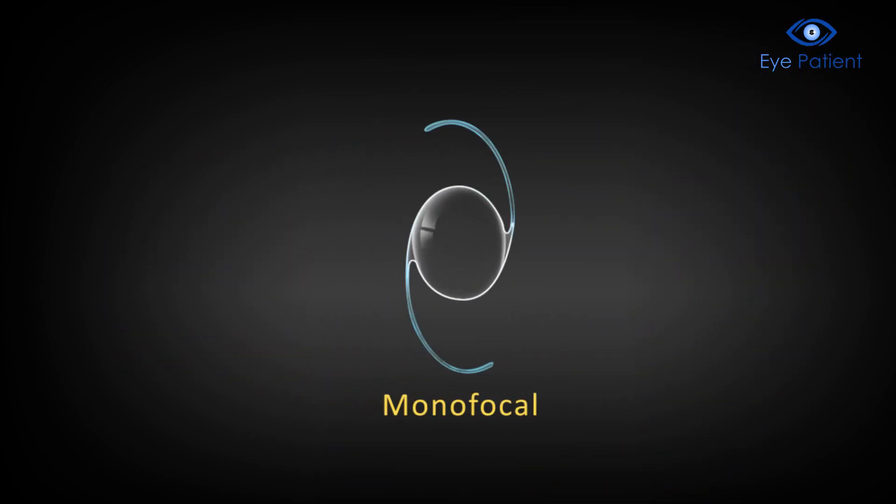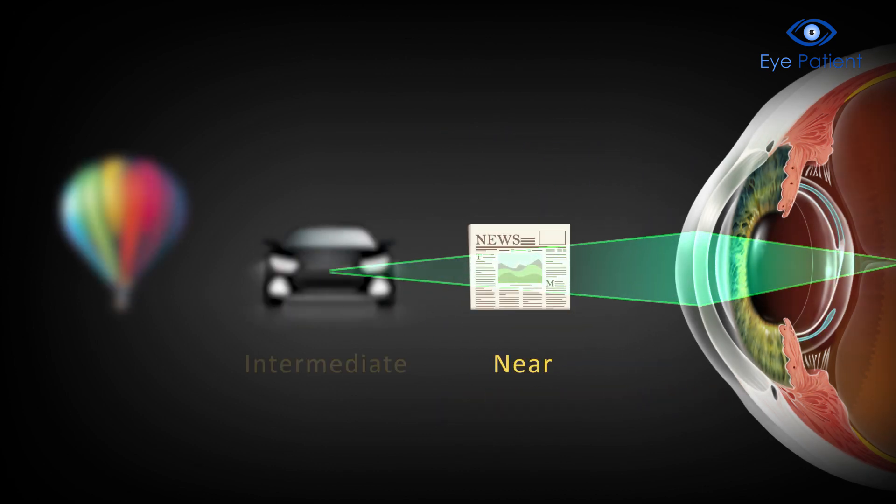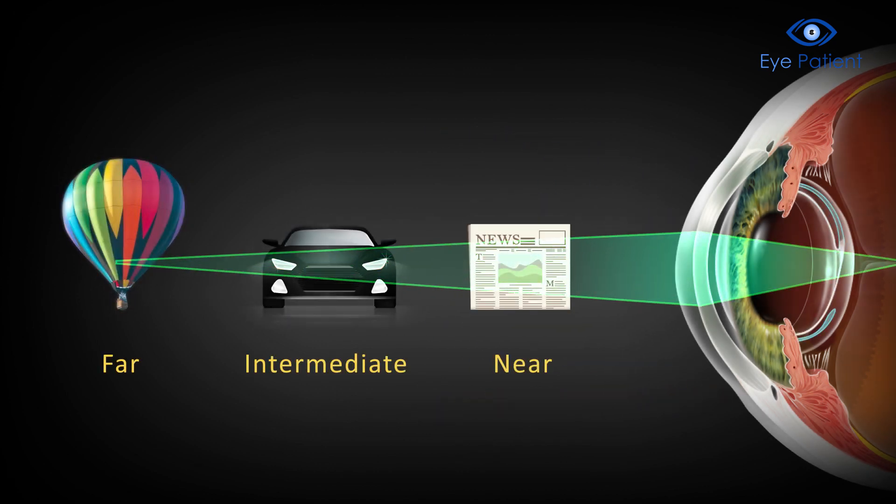Monofocal IOLs are configured with only one single focal point, which can be near, intermediate, or far. They cannot be adjusted to accommodate different distances.